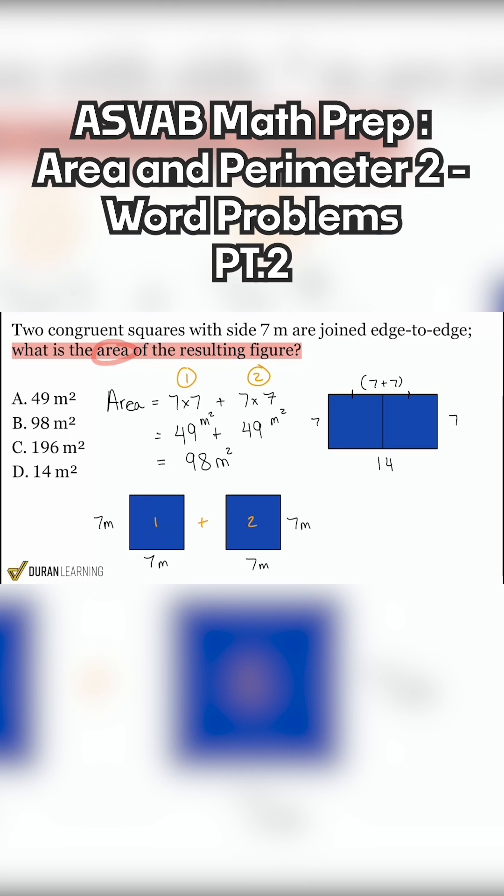Seven plus seven being 14. So if we wanted to find the area that way, we could absolutely go with 14 times seven. And that's still going to give us 98 square meters. And there we go.